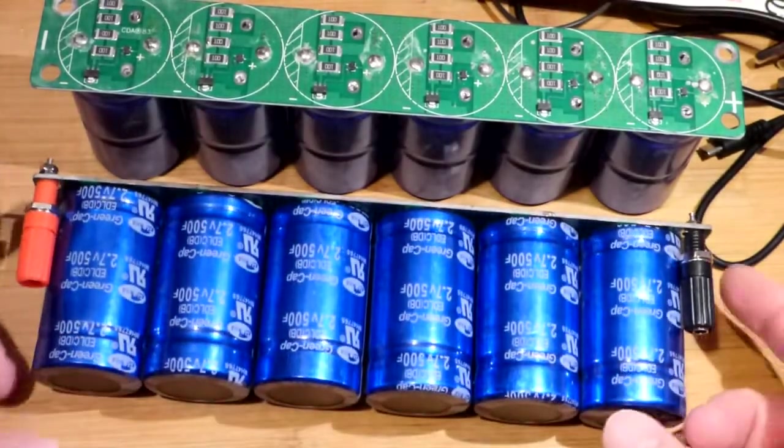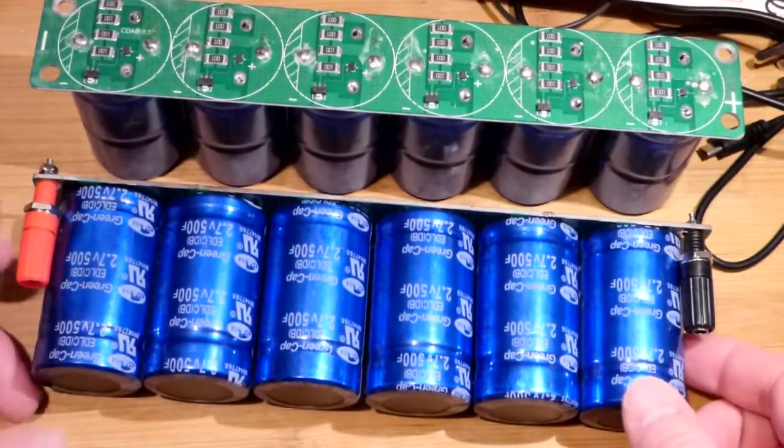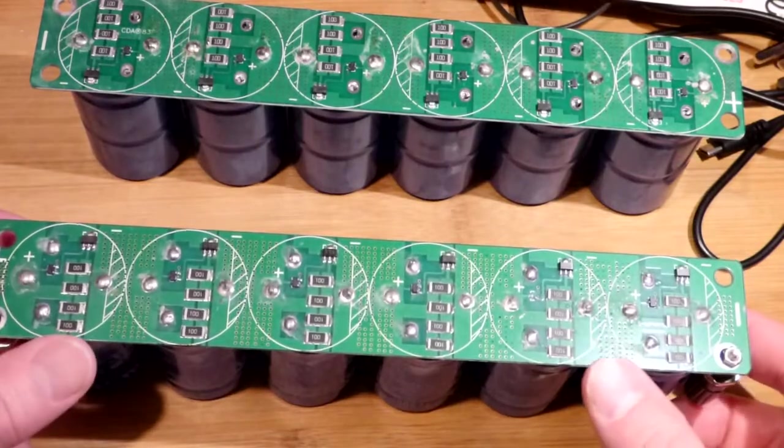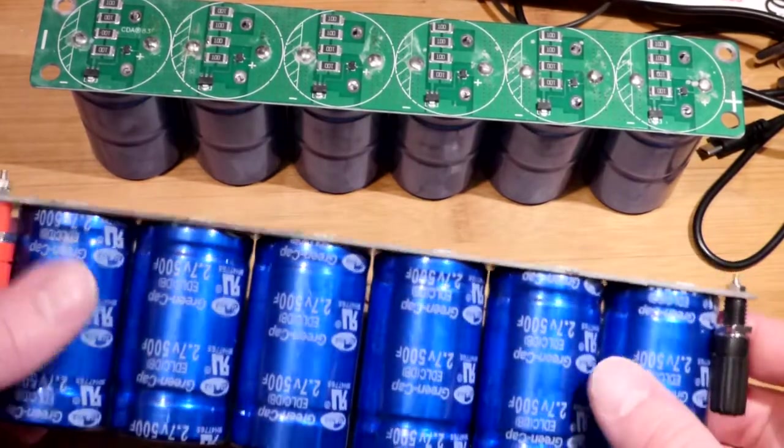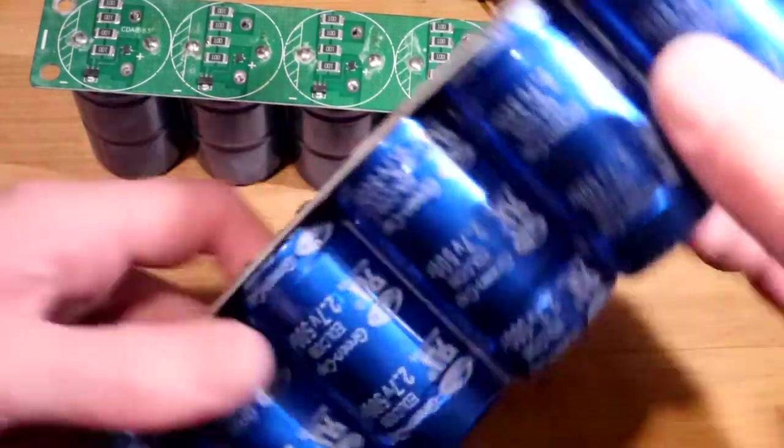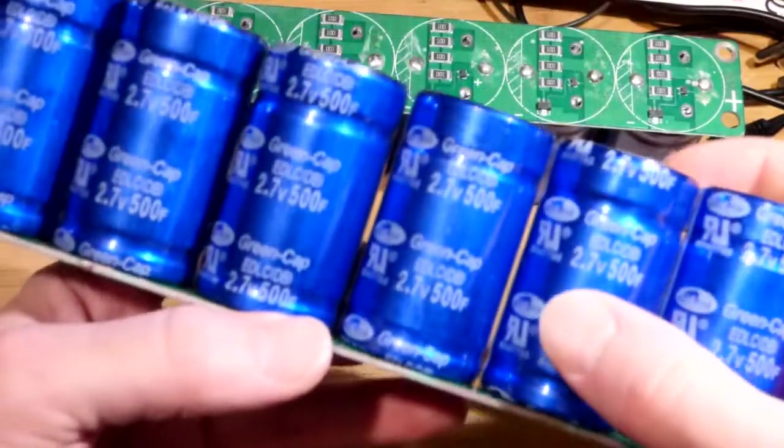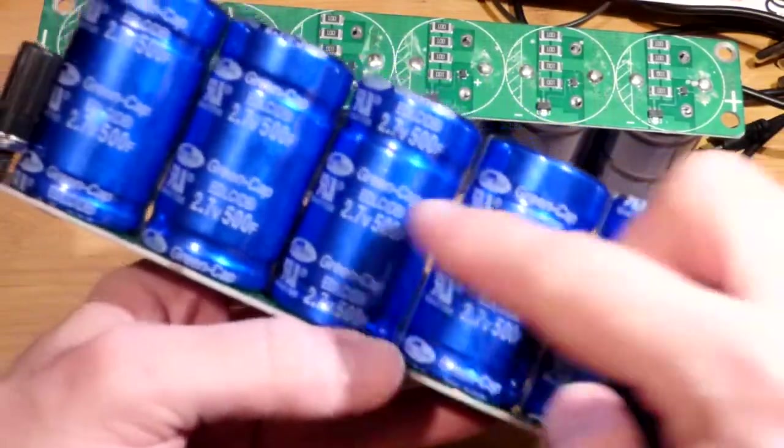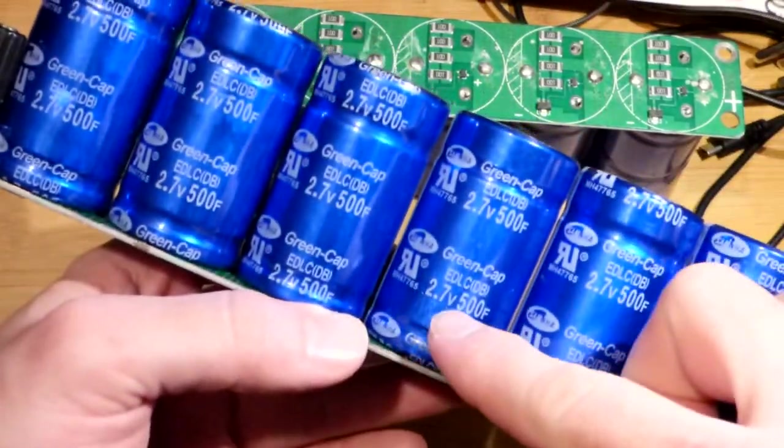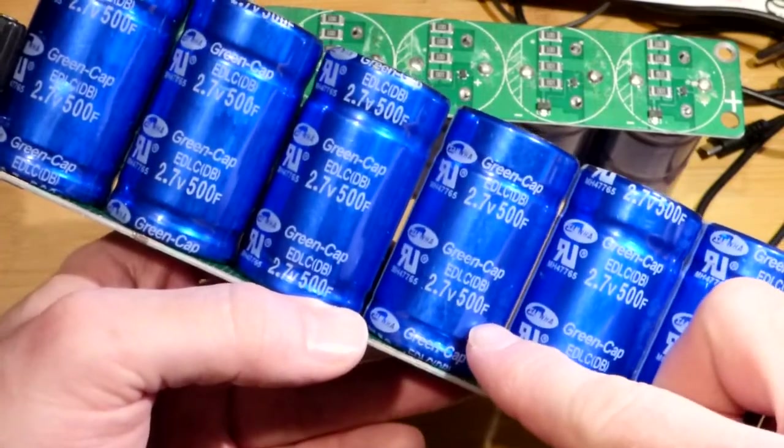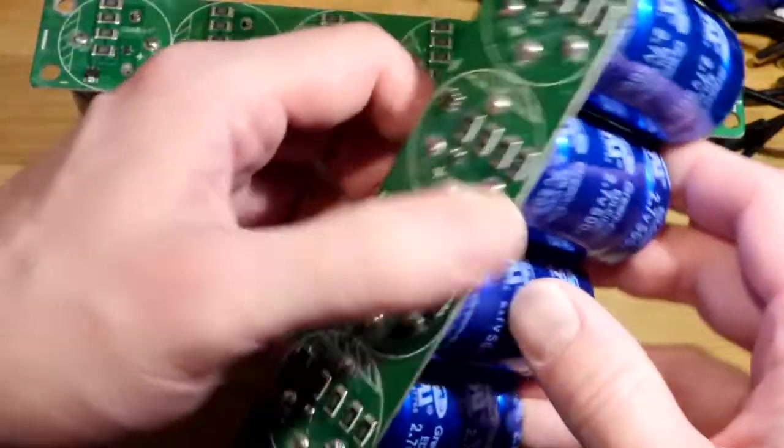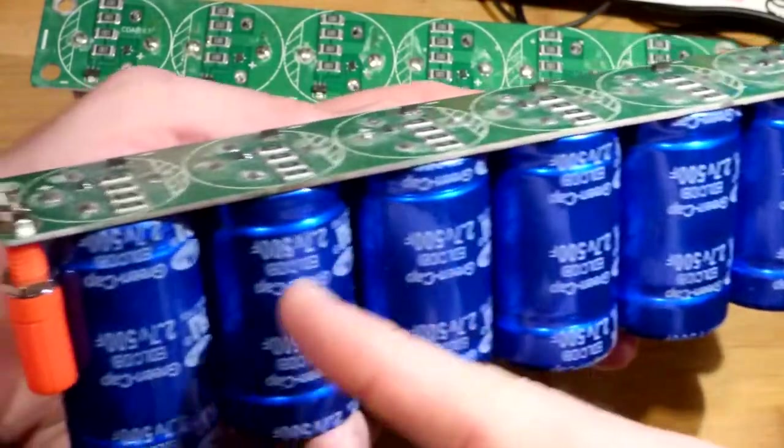So now in this video we're going to look at my two supercapacitor sets with boards. They're in series. I got this one about a year and a half ago. Each one of these supercapacitors is rated for 2.7 volts and 500 farad. Now they're connected in series using this board.